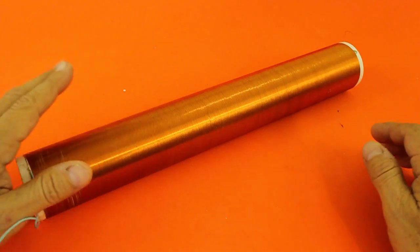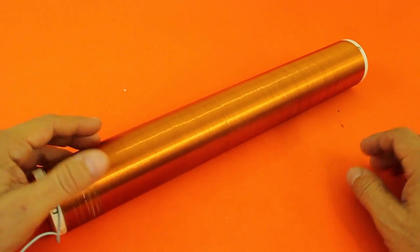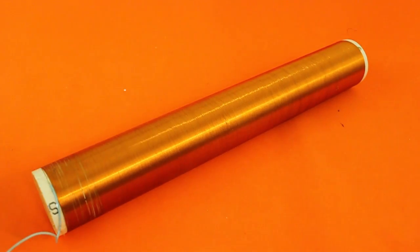I used PVC tubing for my coil. But, you can use any plastic tube or even a cardboard tube. However, you cannot use a tube that is made of a conducting material like iron or aluminum. That will not work.